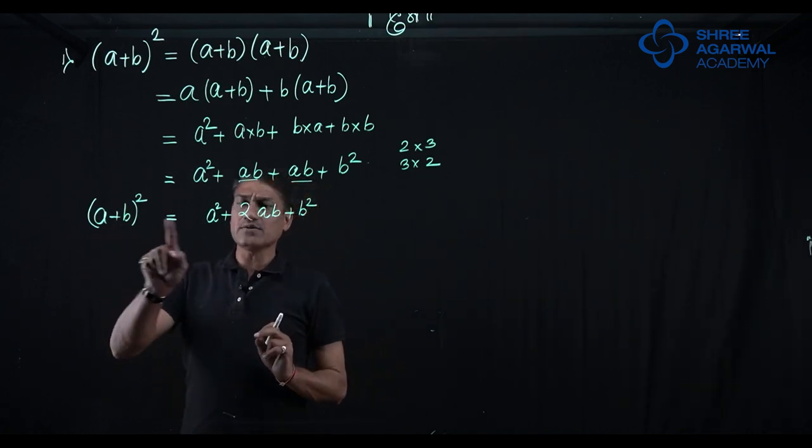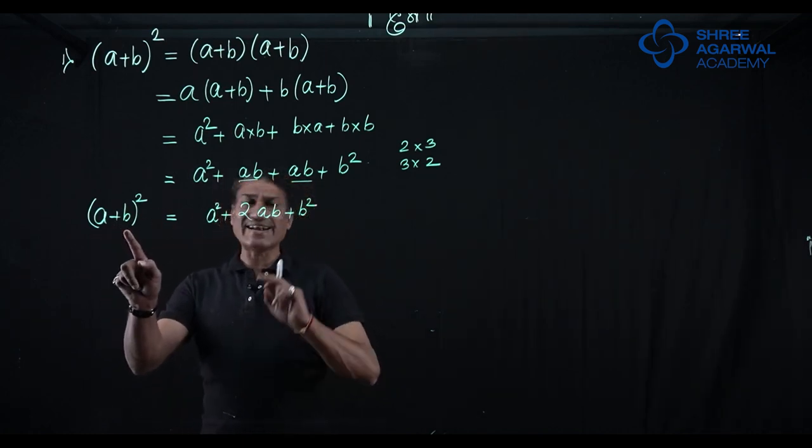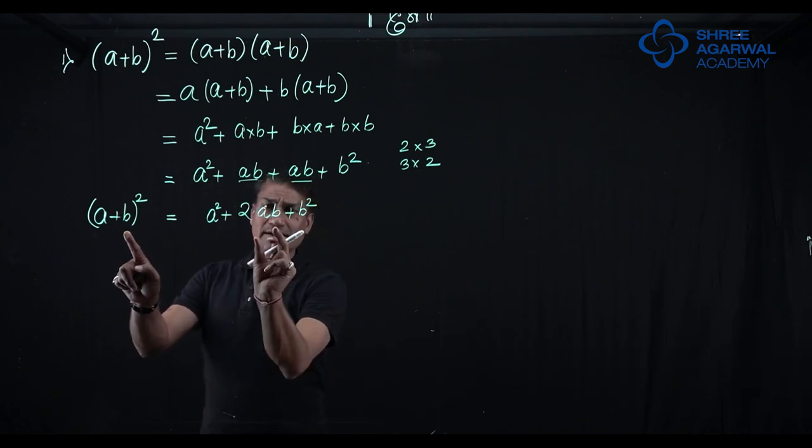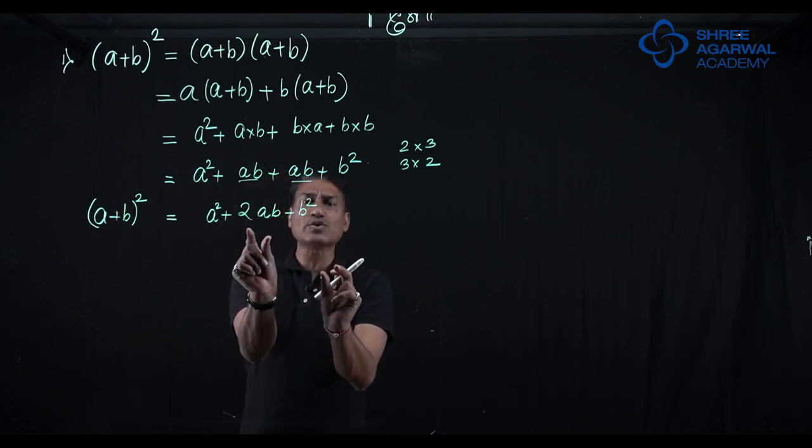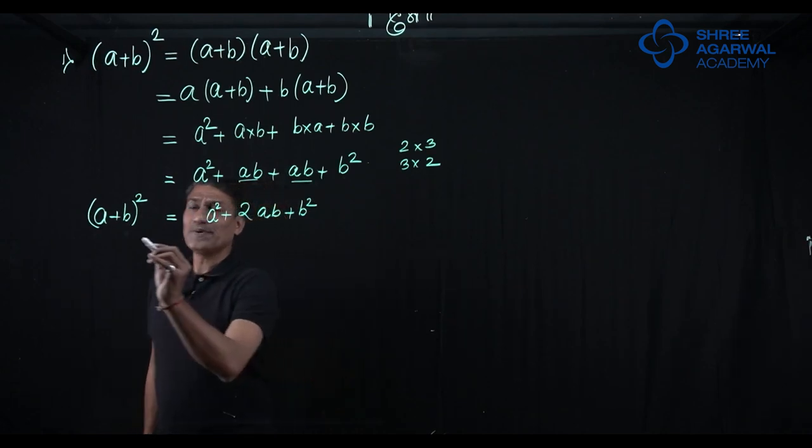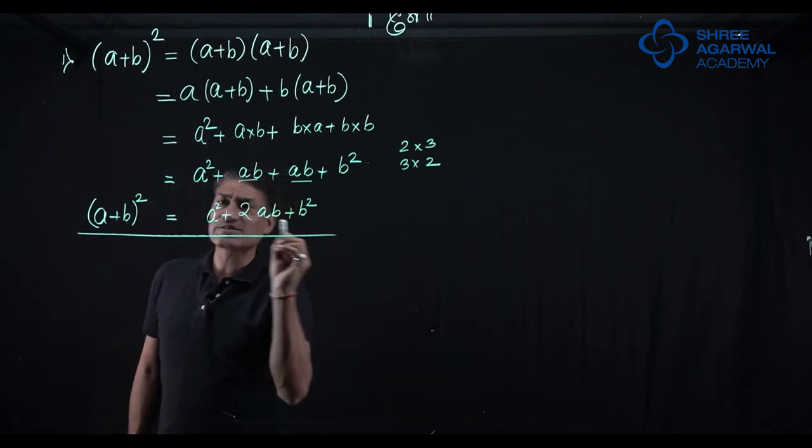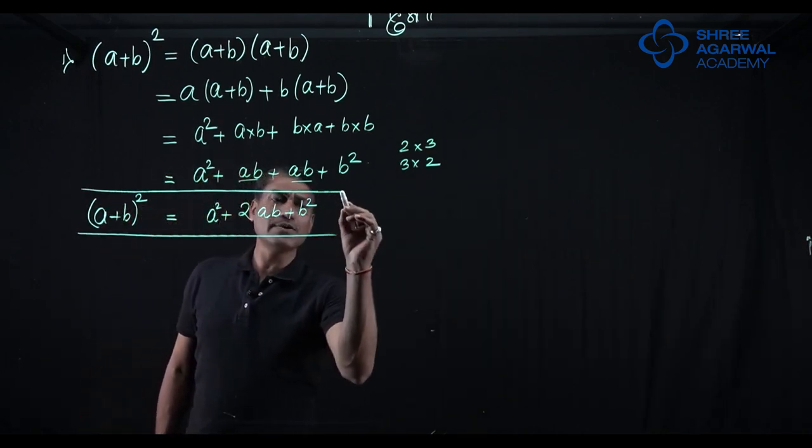So ultimately, we understood that a plus b bracket square is a square plus 2ab plus b square. First term is square, second term is square and middle term is twice the product of the two. So please do not forget this expansion, a very important expansion.